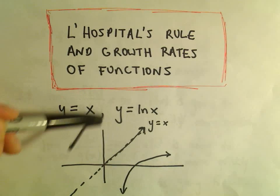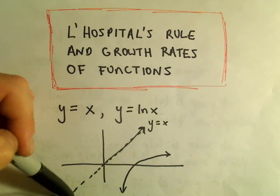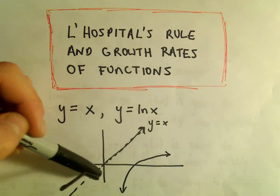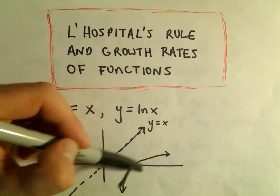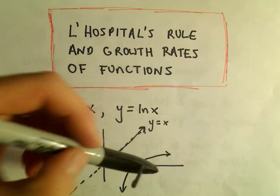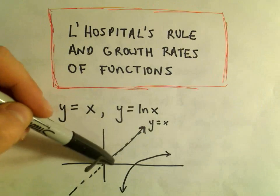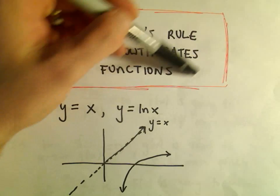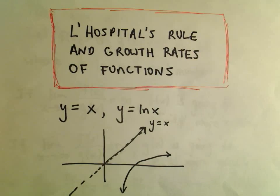For example, if you think about y equals x — y equals x is just our 45-degree line that goes through the origin — and y equals ln of x, which is our little logarithm curve. They both get arbitrarily large as x gets large, but clearly y equals x is going to get larger much faster than y equals ln of x.